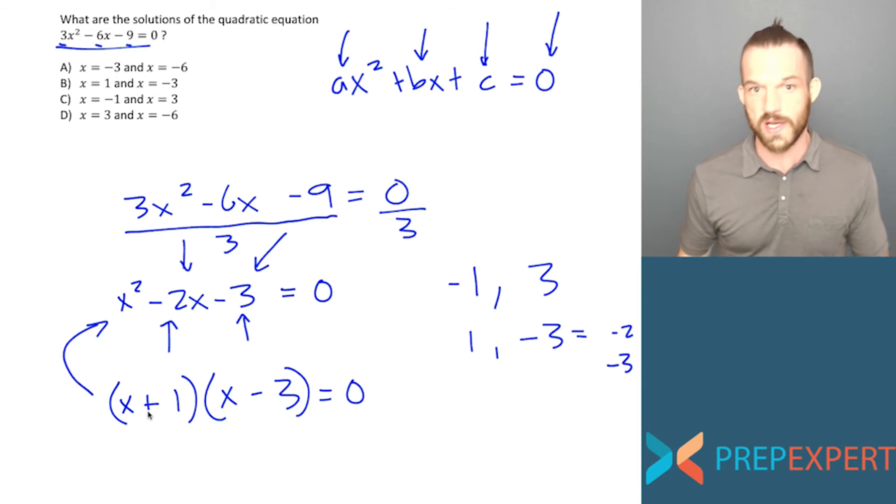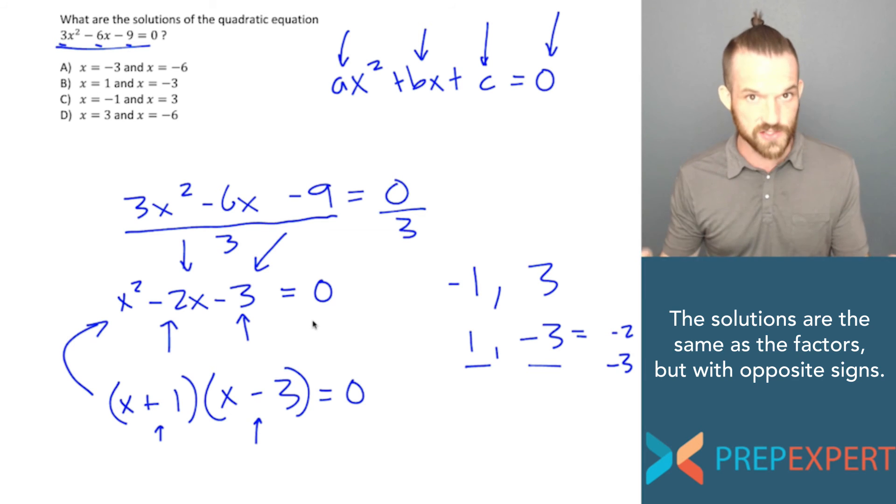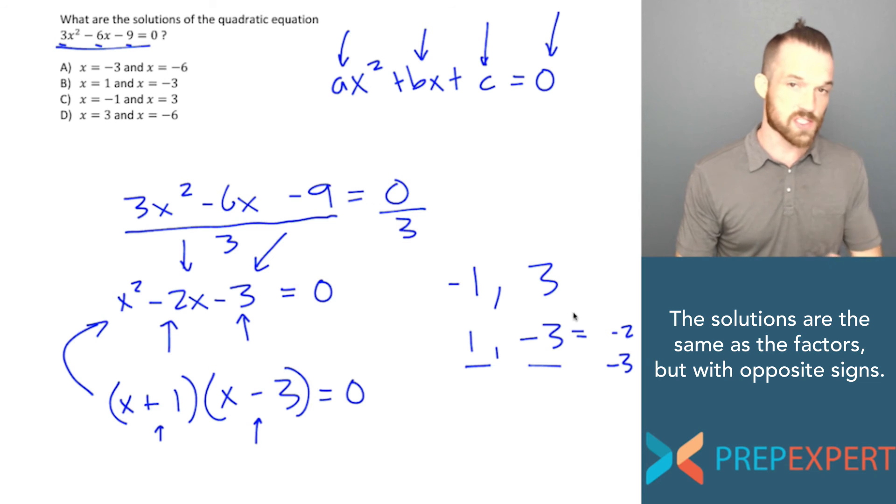Now, the last thing to note is that once I have factored the quadratic, the values of x that make it true, in other words, the solutions to this quadratic, are not the same as its factors. So the factors we found were positive 1 and negative 3. But actually, the values of x that make this equation true are the values of x that would make this binomial equal to 0 and the one that would make this binomial equal to 0, which are actually the factors, but with their signs reversed. So remember, the solutions to a quadratic are the same as the factors, except with their signs reversed. So my solutions here are not 1 and negative 3, they are in fact x equals negative 1 and x equals positive 3.